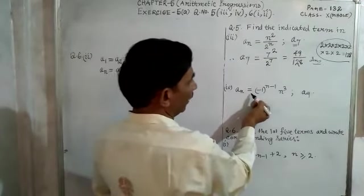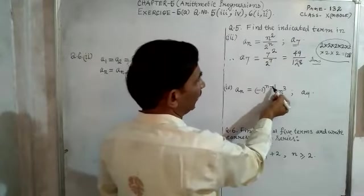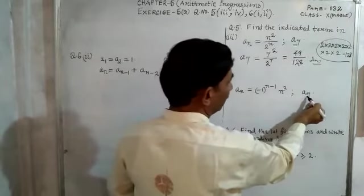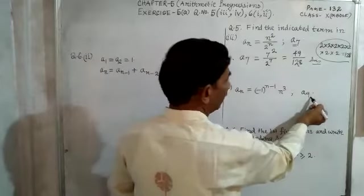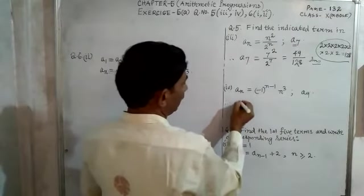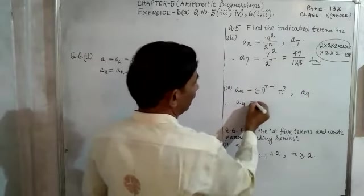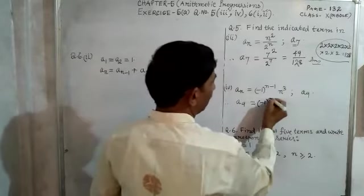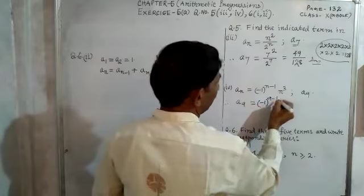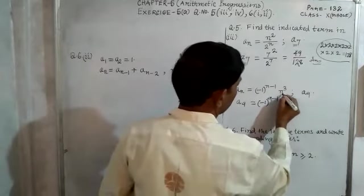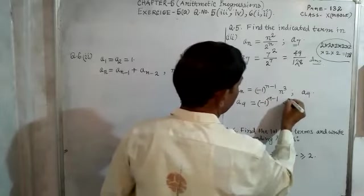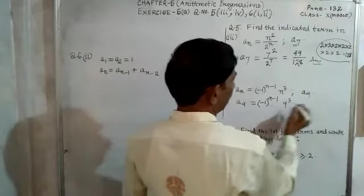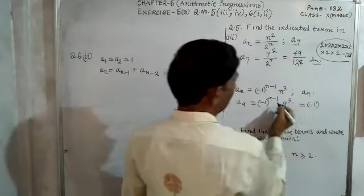Now sub-number four: aₙ = (-1)^(n-1) · n³. We have to find a₉, which means the value of n is 9. Doing the solution: a₉ = (-1)^(9-1) · 9³. So in this expression, n = 9, giving us (-1)^(9-1) and then 9 cubed.